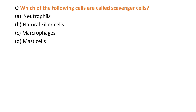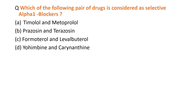The next MCQ: which of the following cells are called scavenger cells? Macrophages are known as scavenger cells. The next MCQ: which of the following pair of drugs is considered selective alpha-1 blockers? The answer is prazosin and terazosin — these are alpha-1 blockers.